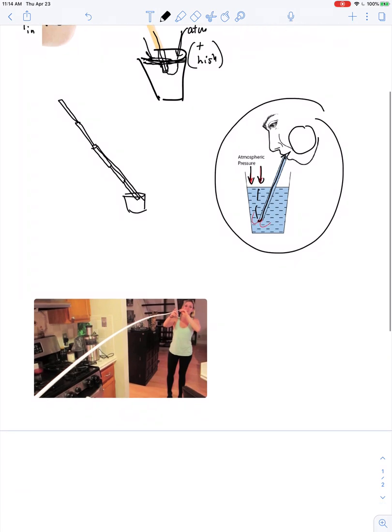Remember that absolute pressure is equal to atmospheric pressure plus gauge pressure, and gauge pressure is the added pressure you have with depth, so it's equal to rho g h.